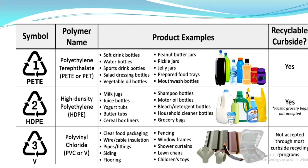Here is a list of plastics used in daily life. Code 1 represents PET (polyethylene terephthalate), used in soft drink bottles, water bottles, sports drink bottles, salad dressing bottles, vegetable oil bottles, peanut butter jars, jelly jars, and mouthwash bottles. Code 2 represents HDPE (high density polyethylene), used in milk jugs, juice bottles, yogurt tubs, butter tubs, shampoo bottles, and grocery bags.